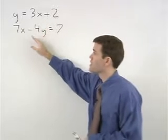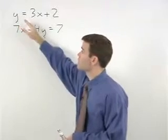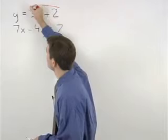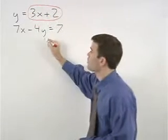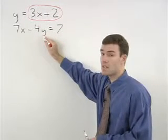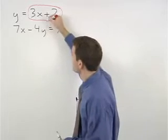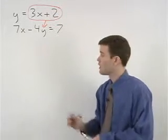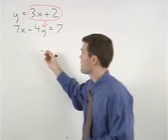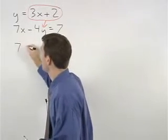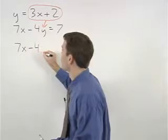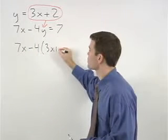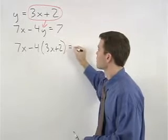In other words, since y means the same thing as 3x plus 2, we can replace the y in the second equation with a 3x plus 2. Our second equation then becomes 7x minus 4 times parentheses 3x plus 2 equals 7.